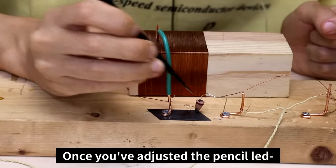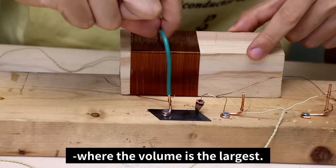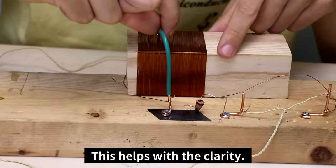Best for me. It helped to use the edge of the blade instead of the center part of the blade. Once you've adjusted the pencil lead, move the position of the coil to where the volume is largest. This helps with the clarity.